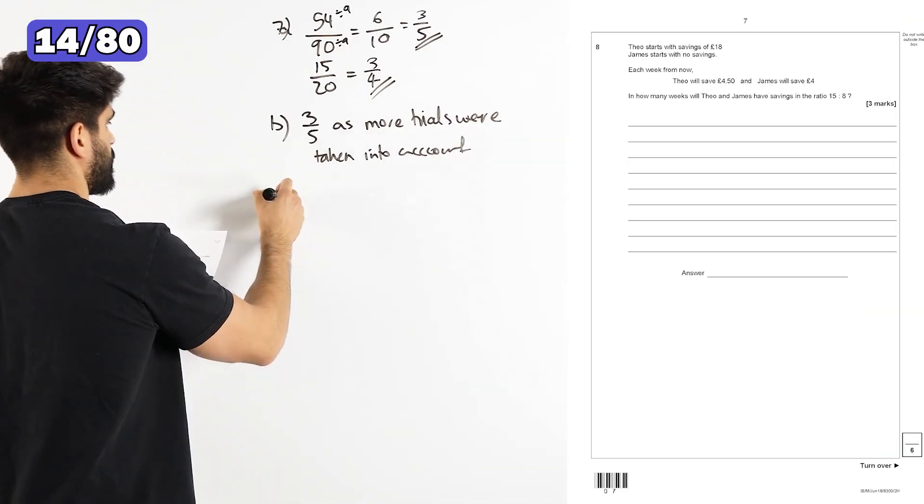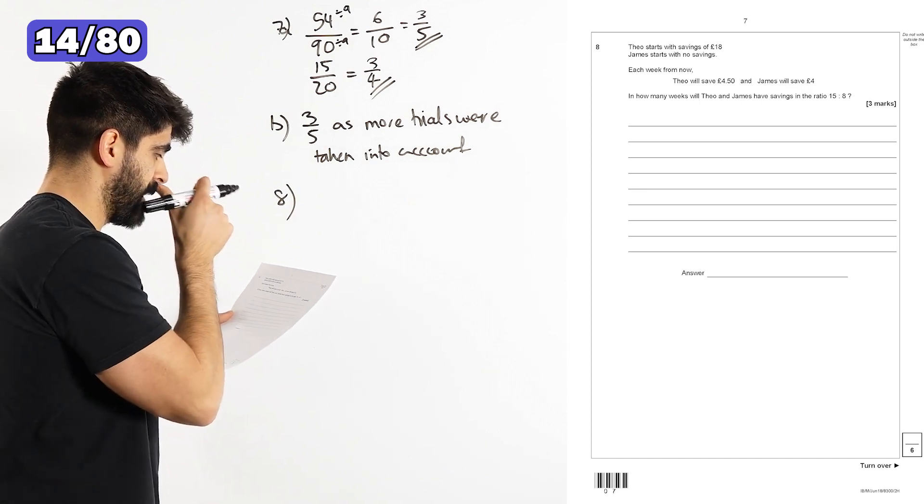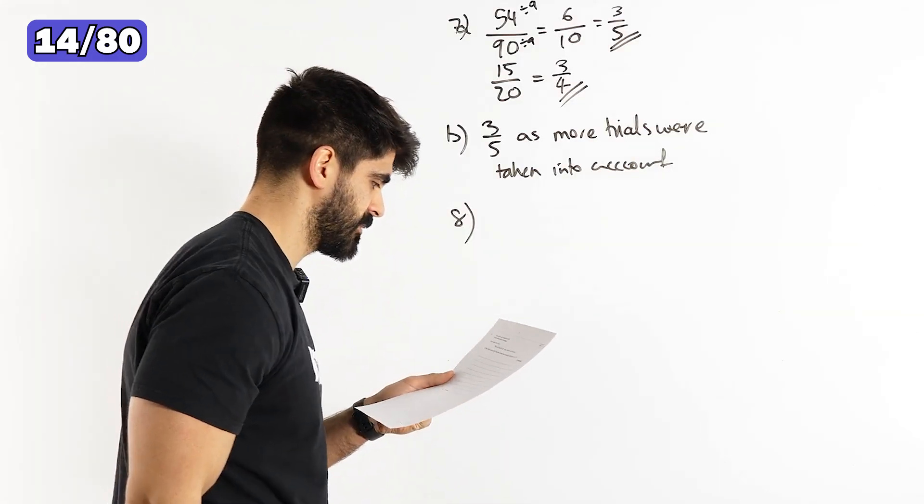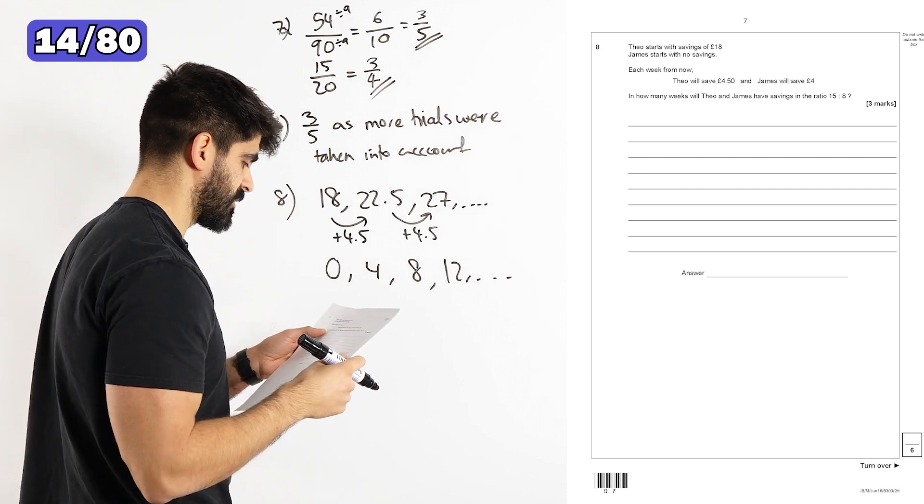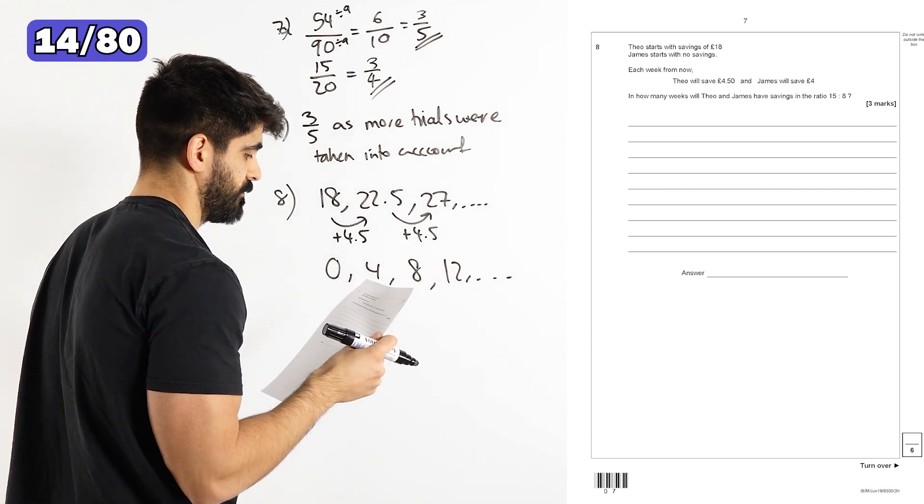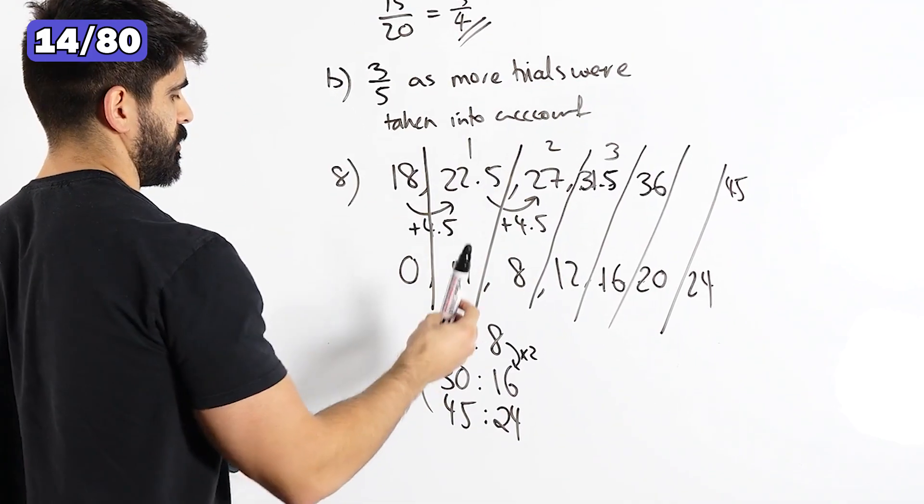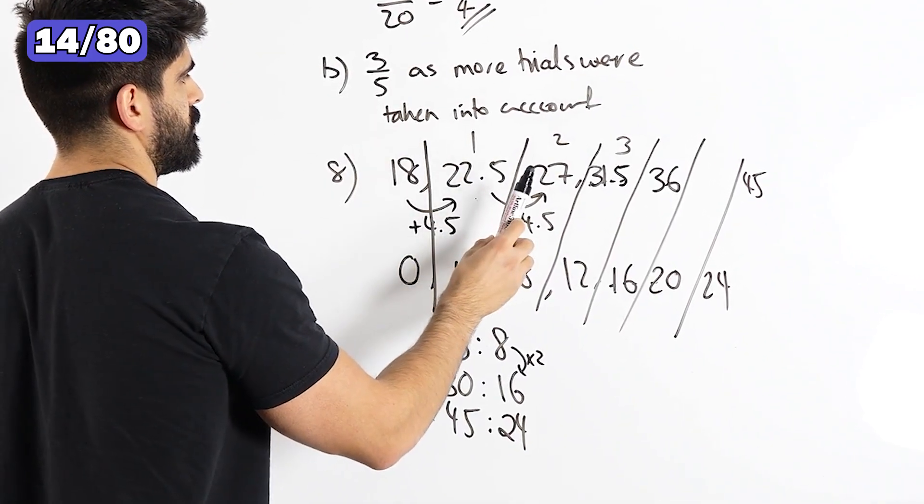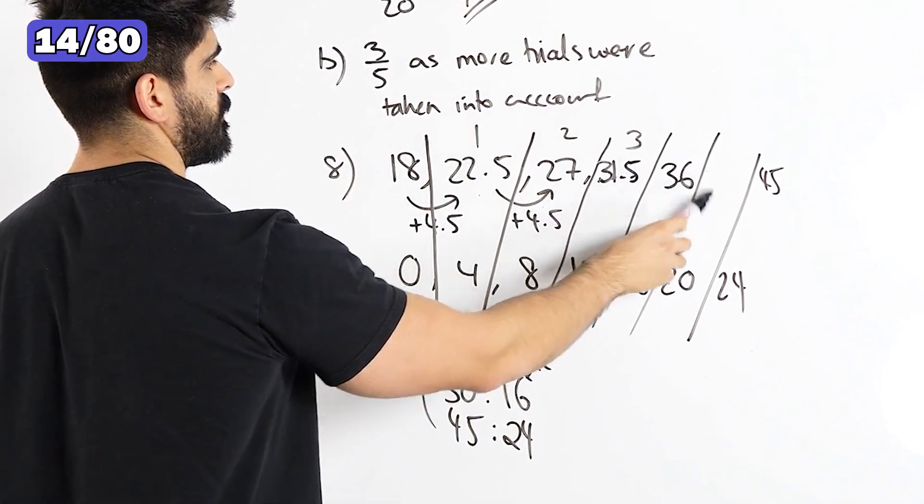Question eight says, Theo starts with savings of 18 pounds. This guy, man, he needs to work a bit harder. In how many weeks will Theo and Jamez have savings in the ratio 15 to 18? So that's going to be one, two, three, four, five, six weeks.